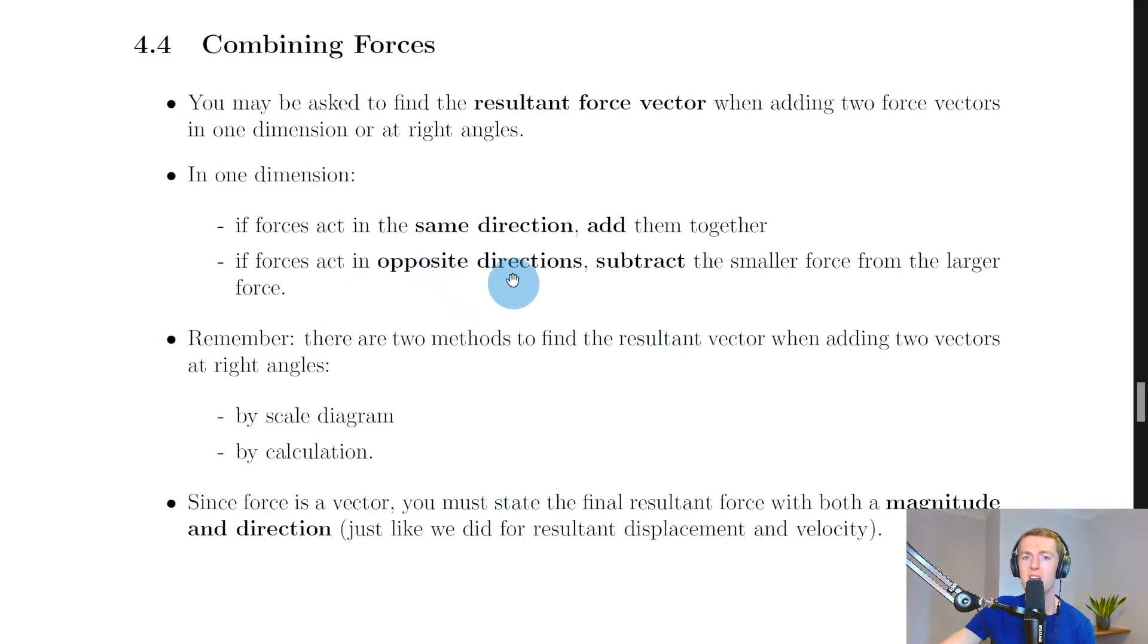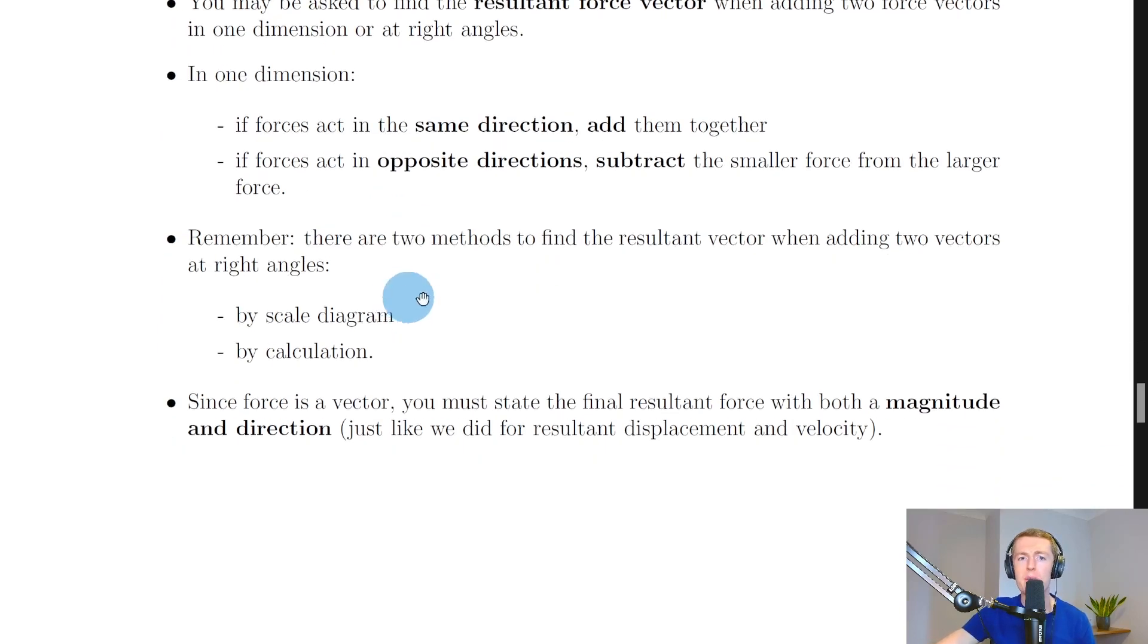We've mostly just used the idea that when the forces act in opposite directions, we subtract the smaller from the larger force. Now it also says to remember that there are two methods to find the resultant vector when adding two vectors at right angles. So it's not always going to be as easy as forces in one dimension.